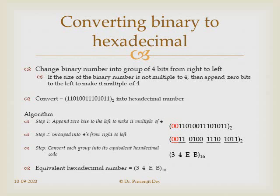To convert a binary number to hexadecimal, we first make the size of the binary number a multiple of 4 by appending zeros to the leftmost position. In this example, we have a 14-bit binary number, so we append two zeros to make it 16 bits. Then we group the bits into groups of 4 from right to left, and convert each 4-bit group to its hexadecimal representation. In this case the result is 34EB.